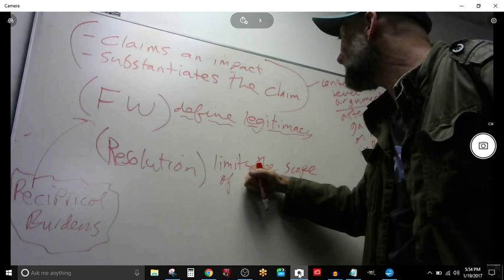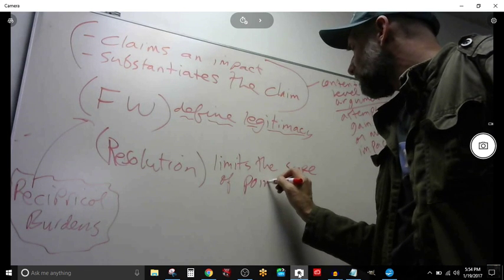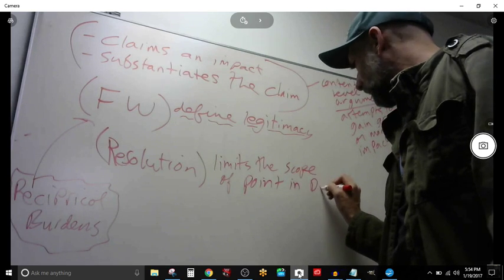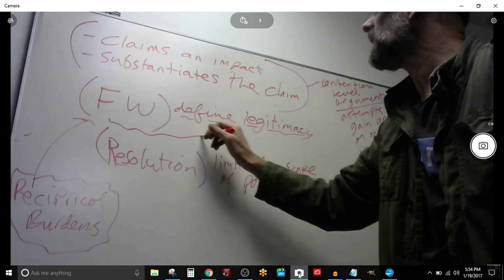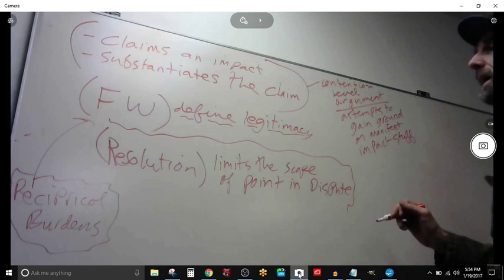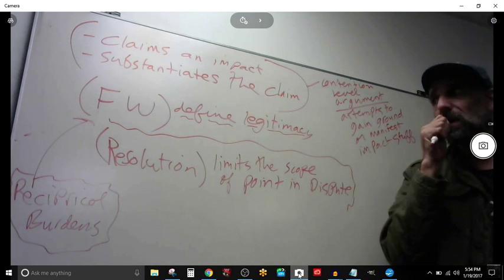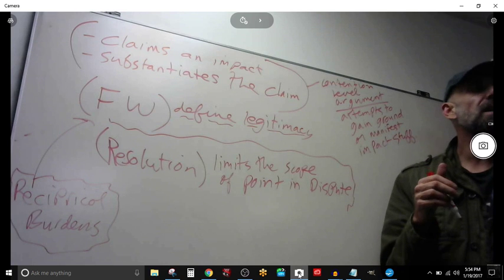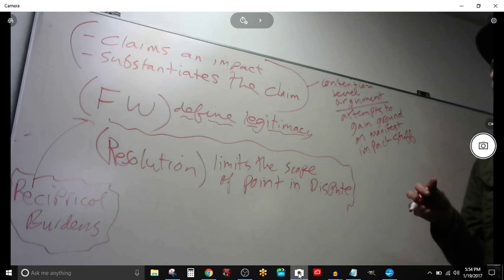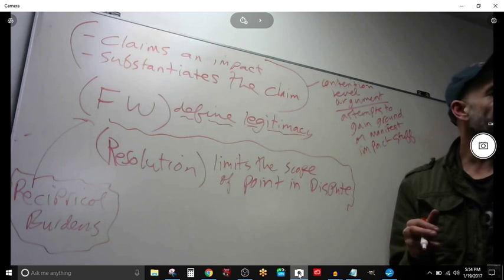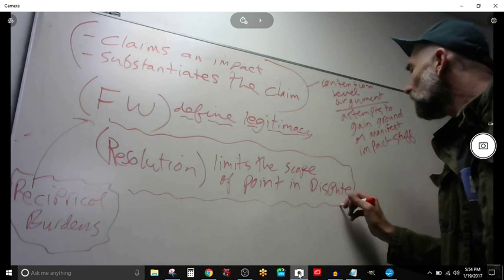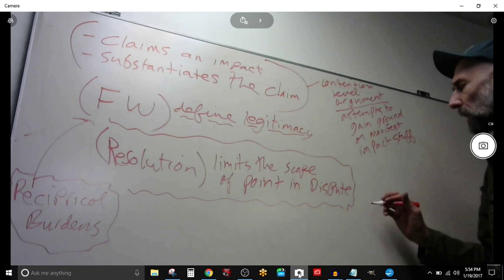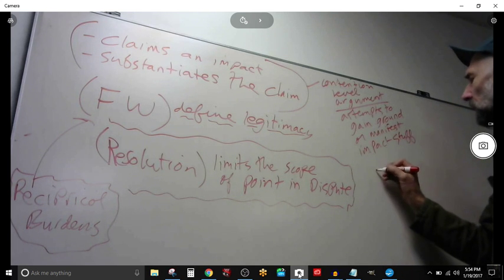The resolution limits the scope of the argument. This says what's legitimate within the argument as a whole - the big argument. I changed this from argument to point and point in dispute. This limits the scope. A lot of times what will happen is I will get in arguments all the time on my YouTube channel with people who do something that's very dishonest, and I don't think they're being dishonest intentionally. I don't think they understand it's dishonest.